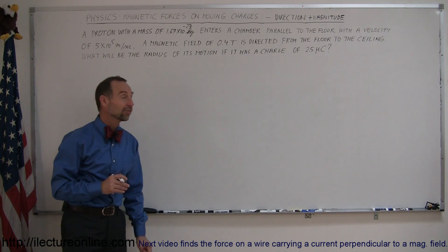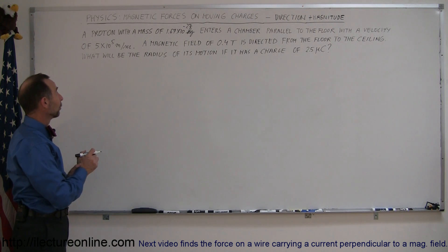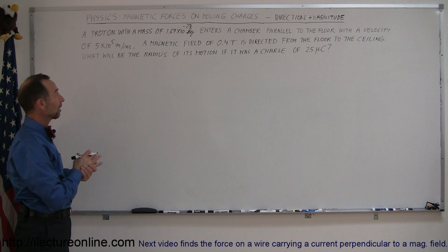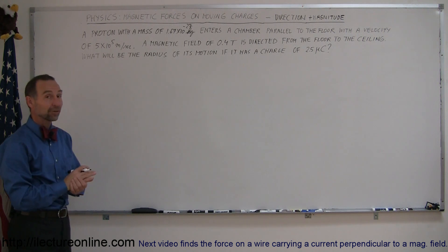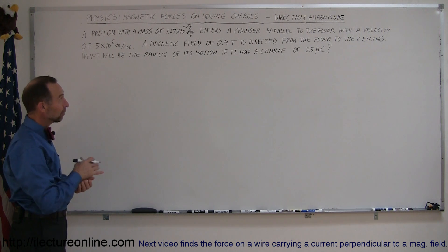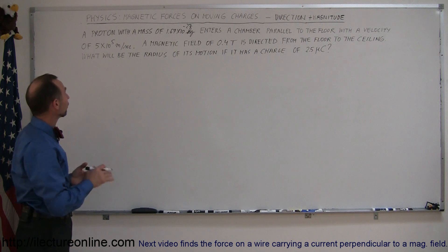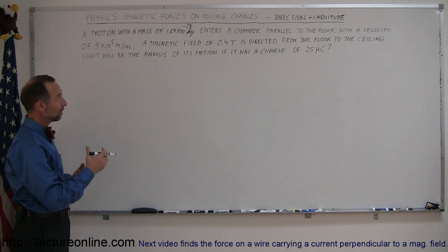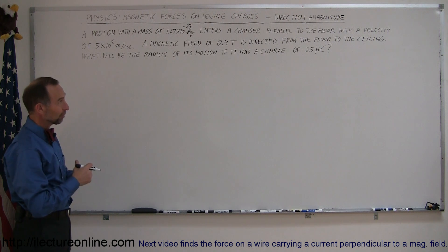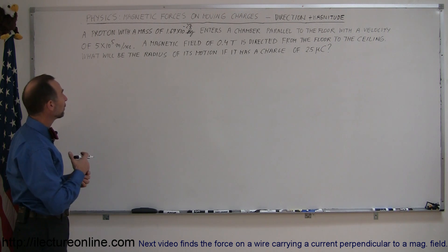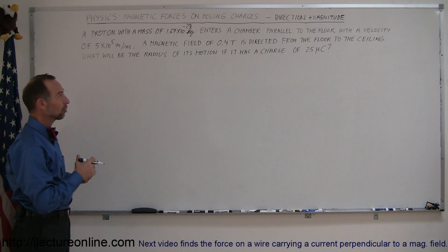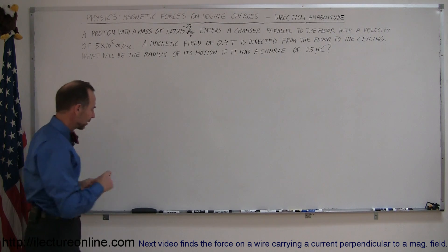Welcome to iLectures Online. This time I'm going to show you an example where we have a proton that has a mass of 1.67 times 10 to the minus 27 kilograms entering a chamber parallel to the floor with a velocity of 5 times 10 to the 5th meters per second. A magnetic field of 0.4 teslas is directed from the floor to the ceiling. What will be the radius of its motion if it has a charge of 2.5 microcoulombs?